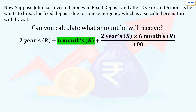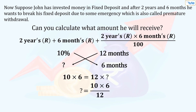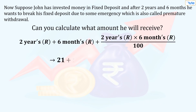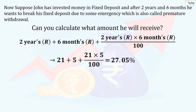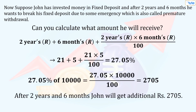First we will find the interest rate for 6 months. Here the 10% rate is for 12 months, and we have to find the interest rate for 6 months. So we will solve this using cross multiplication and we get 5%. We will add the previous 2-year interest rate of 21% and the interest rate of the last 6 months, which is 5%, and then add the product of these 2 interest rates divided by 100. Solving this, we get 27.05%. So after 2 years and 6 months, John will get an additional Rs. 2,705.